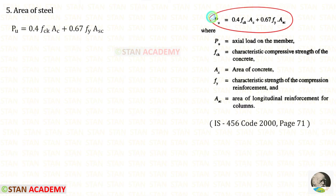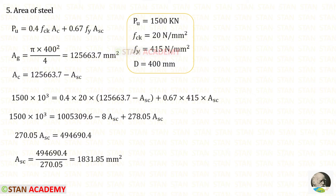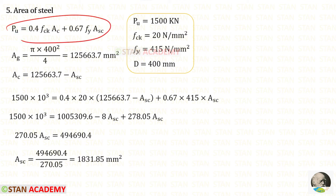Using the formula for an axially loaded column we can find the area of longitudinal steel Asc. We first find the gross area Ag. Since it is a circular column, Ag = π/4 × D² = π/4 × 400² = 125663.7 mm². Since Ag = Ac + Asc, we have Asc = Ag − Ac. Substituting values into the formula, we get Asc = 1831.85 mm².